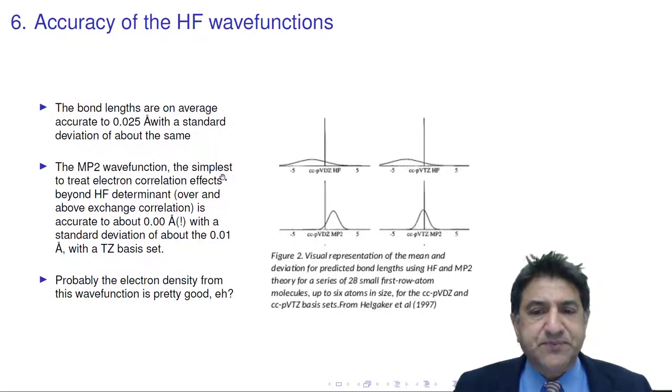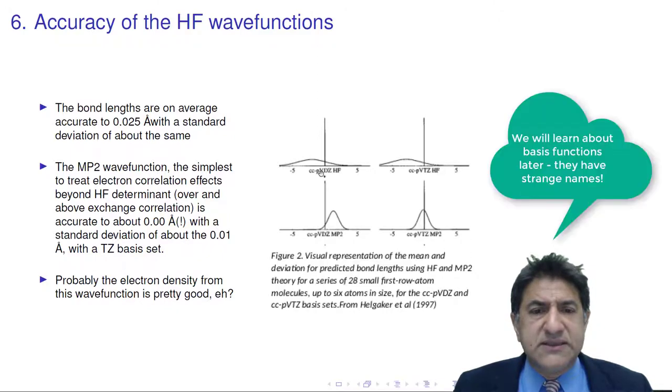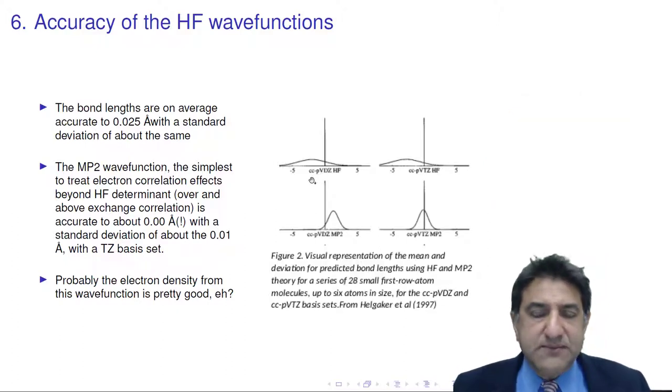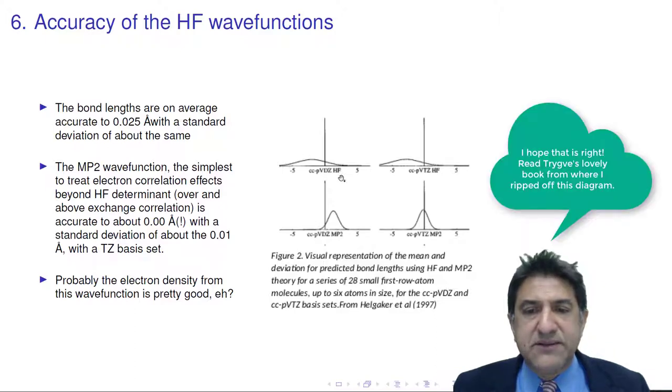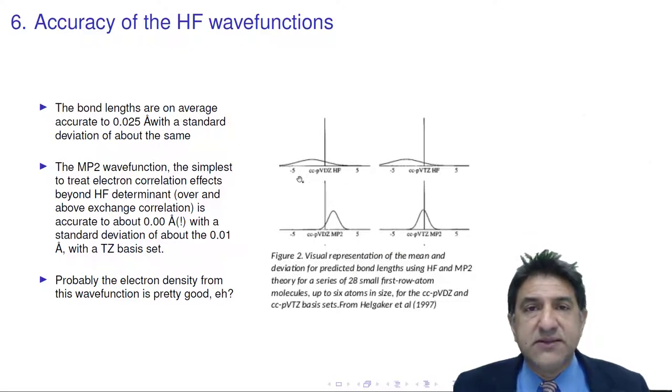Firstly, comparing bond lengths. So here are the Hartree-Fock results using one series of functions to approximate the molecular orbitals, one basis set we call that, and a slightly better one. And the axis here is in picometers. So the deviation of predicted bond lengths when we minimize the energy of the molecular system so that the forces on the nuclei are zero. It turns out that the accuracy is of order 0.025 angstrom. That's very small. That's really, really good.